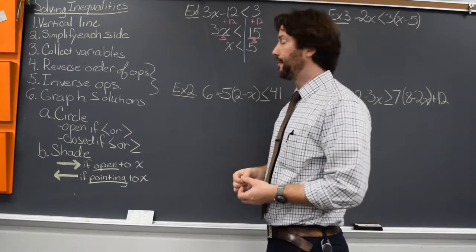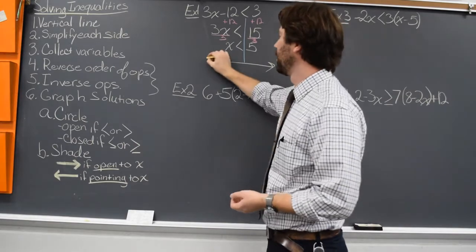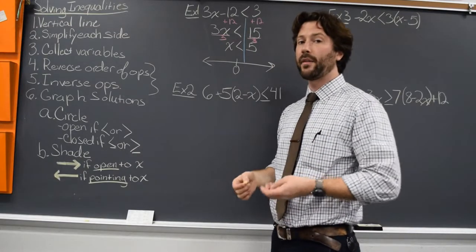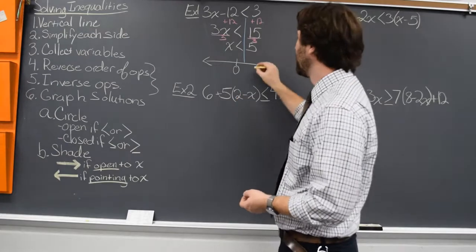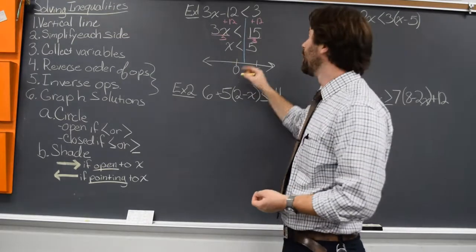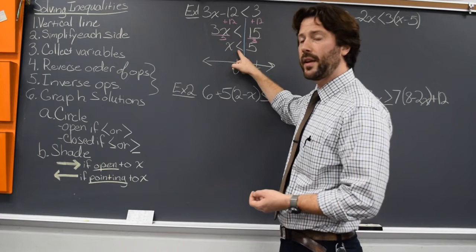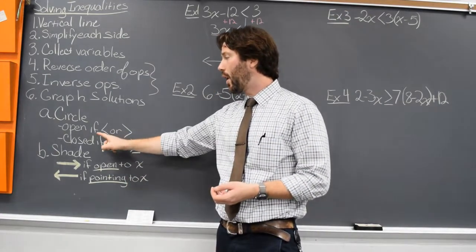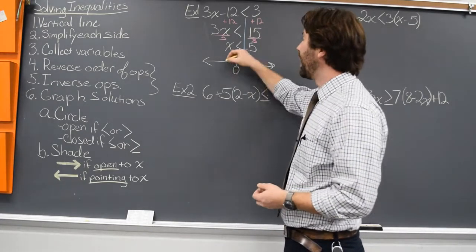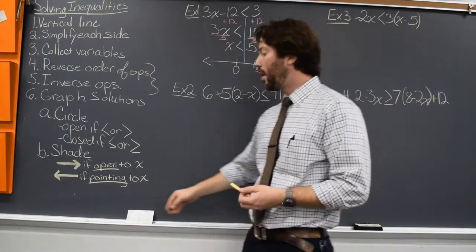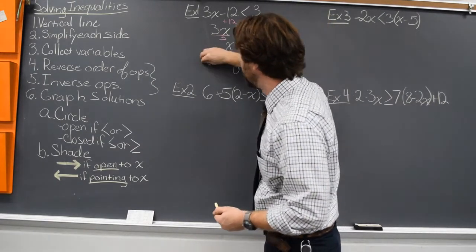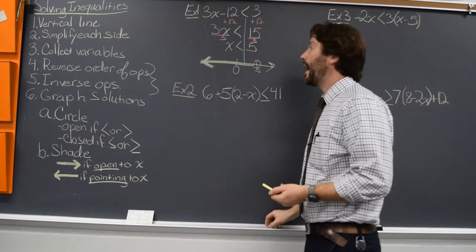So we have x is less than 5. Graphing the solution, we start with a number line. I always like to put 0 on my number line to give me a reference of where the rest of the numbers are. I have x is less than 5, so I put 5 on the number line. Since it's just less than — not less than or equal to — we're going to use an open circle on that 5. That 5 is not part of our solution set. I want all of the numbers that are less than 5, and the inequality points to x, so we're going to shade to the left.